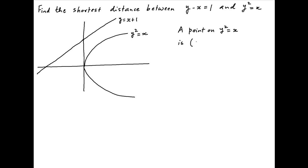Now let's assume that the coordinates of a general point on the parabola y squared equals x are (t squared, t).